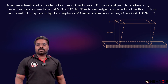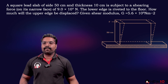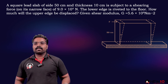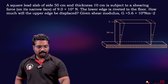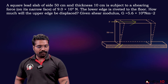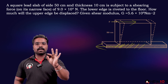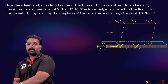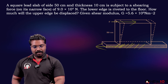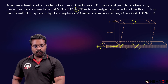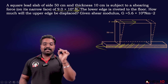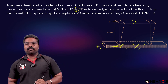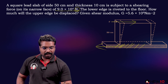Here is another question. A square lead slab of size 50 cm and thickness 10 cm is subjected to a shearing force. The lower edge is riveted — that is, fixed to the floor. A tangential force of 9 × 10⁴ N is applied on the upper end. How much will the upper edge be displaced?